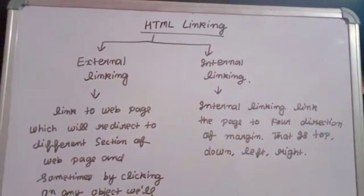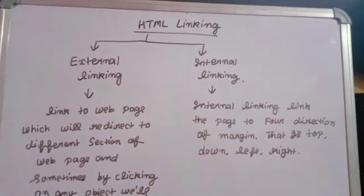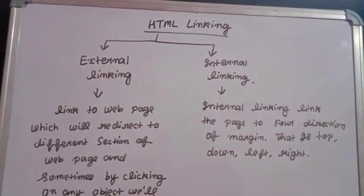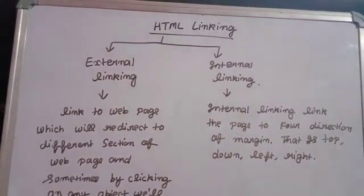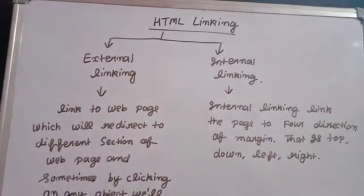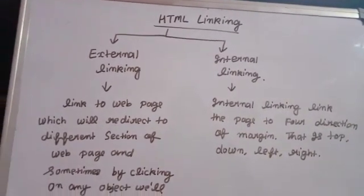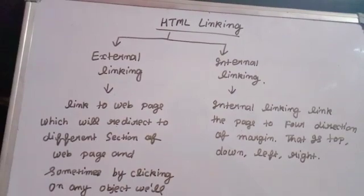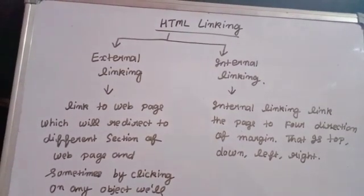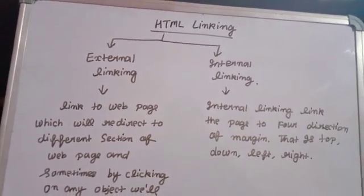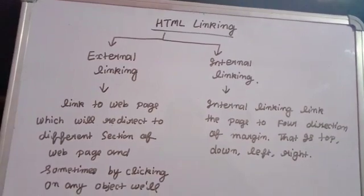Hello students, today I'm going to discuss the topic of HTML linking. You can see it is of two types: external linking and internal linking. External linking means it links to a web page which will redirect to a different section of a web page, and sometimes by clicking on any object we will be redirected to another web page.